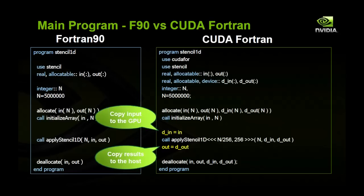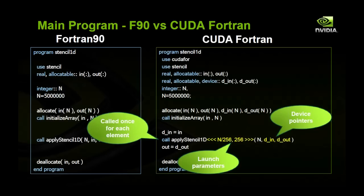Next we need to call our parallel function, which will be called once for every element in our array. We also need to make sure we pass device pointers. In the triple angle bracket syntax — which is how we specify a CUDA kernel — we put in launch parameters that specify the number of threads.